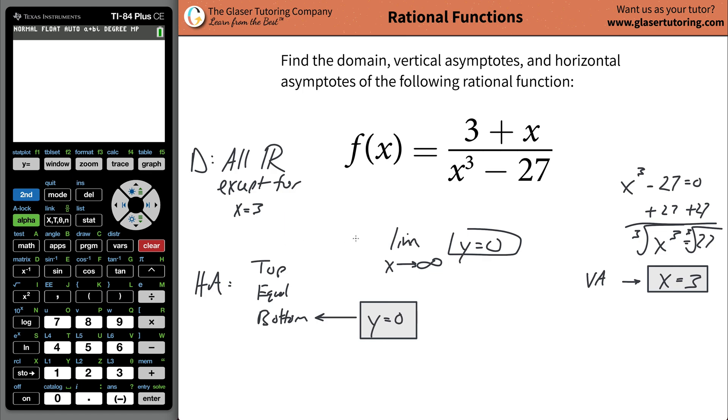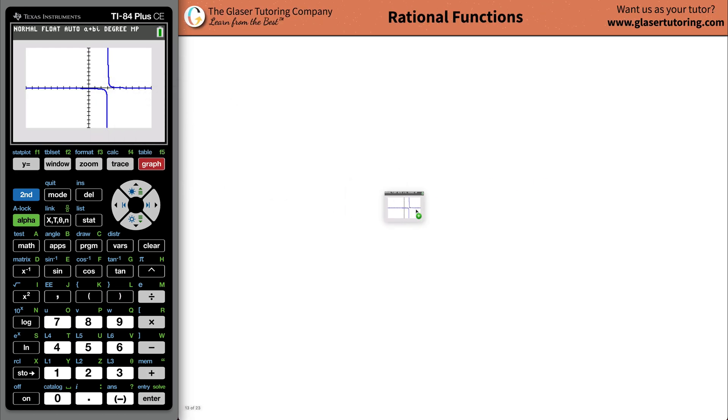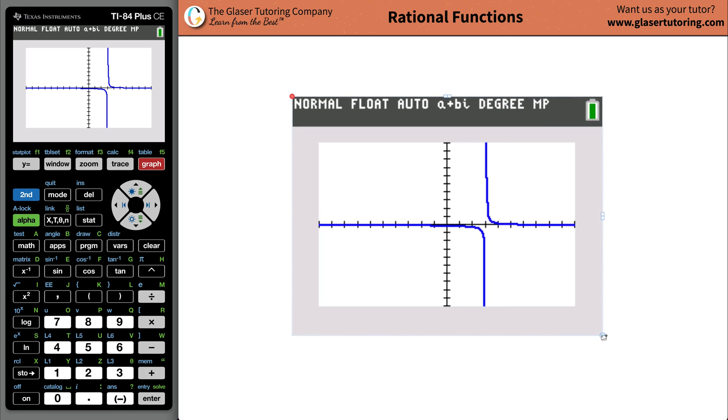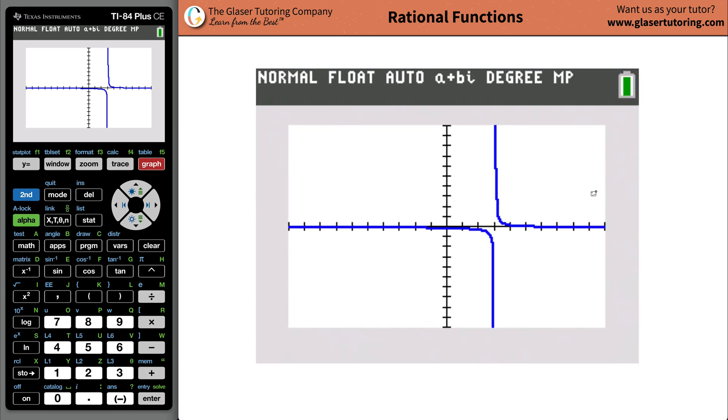Now what we can do is, I mean, that's the end of the problem, but we can always graph this thing. So we graph it, and we see what the calculator says. So 3 plus x, just to kind of get a visual, then divide it by now, open parentheses, going to do x cubed, x cubed minus 27. Now let's see kind of what happens here. And there's the graph. Let's see what it says. Let's blow this up. There it goes, got blown up.